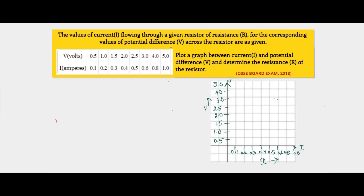Hello students, welcome back. Let's take up the next question — a numerical from the electricity chapter. The question goes: the value of current I flowing through a given resistor of resistance R for the corresponding values of potential difference V across the resistor R as given. Plot a graph between current I and potential difference V and determine the resistance R of the resistor. So let's draw the circuit diagram first.